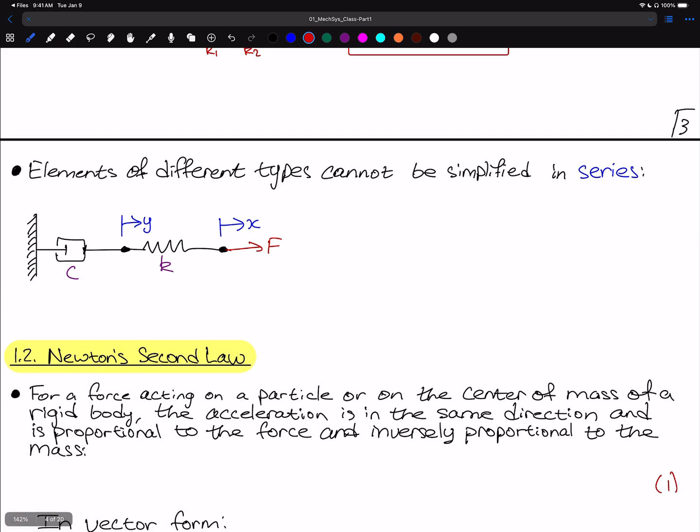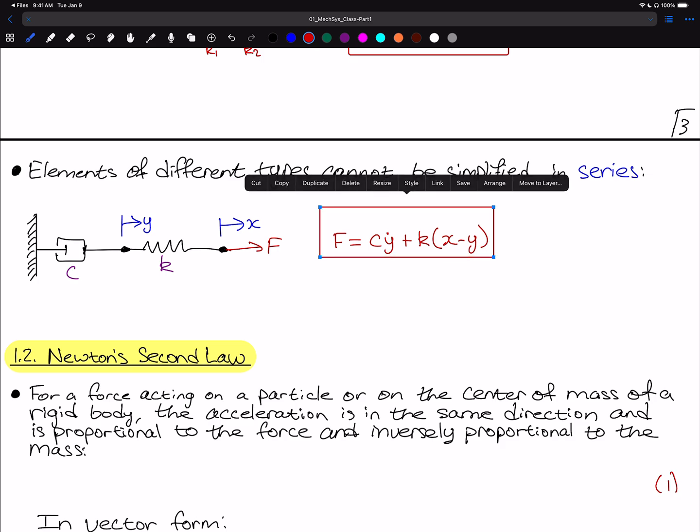Let's talk about how elements of different types in series, like this where we have a damper plus a spring in series, these elements cannot be simplified in series. As a result here, the force is going to be equal to C times Y dot plus K times X minus Y. So there is no relationship between X and Y that we can specify to simplify this equation. In fact, when you have elements like this, you end up with a first order ordinary differential equation that describes the behavior of the system.